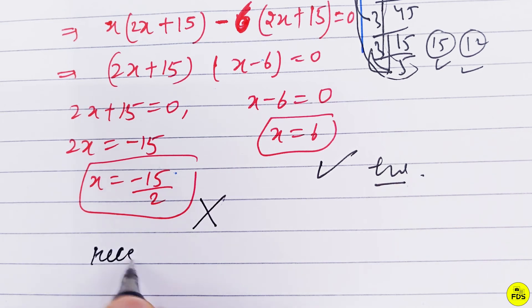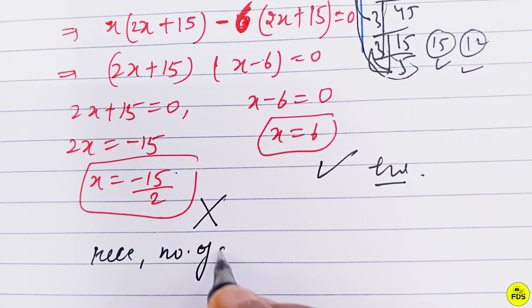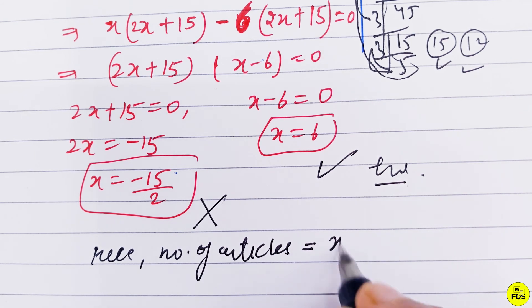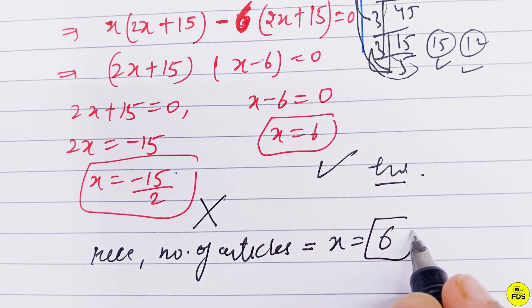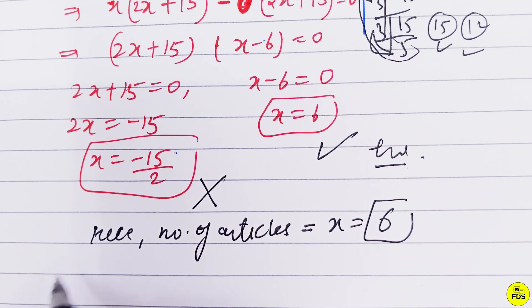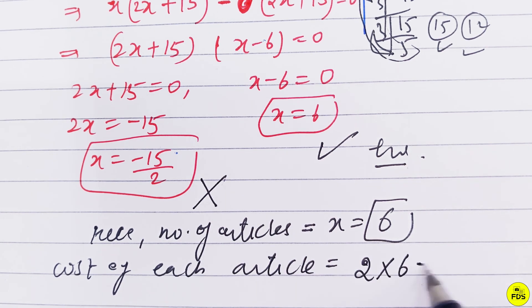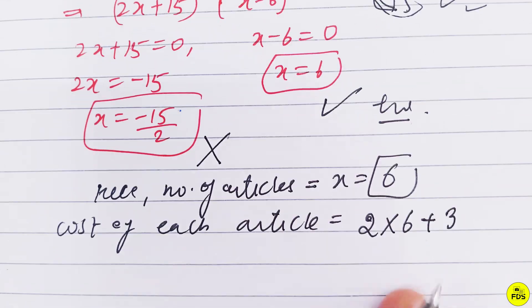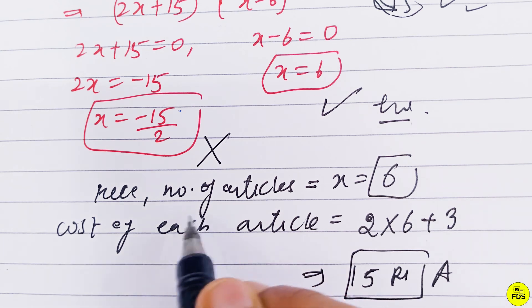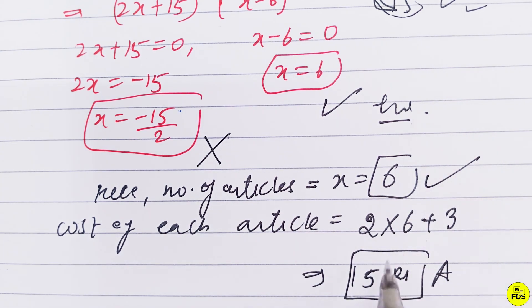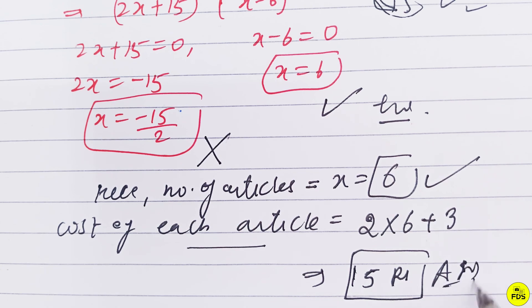Therefore, the number of articles x = 6, and the cost of each article = 2(6) + 3 = 15 rupees. So the number of articles is 6 and the cost per article is 15 rupees.